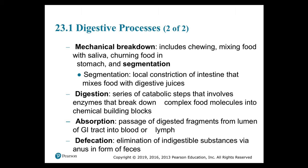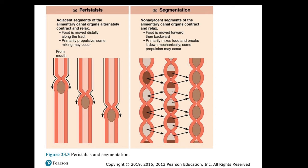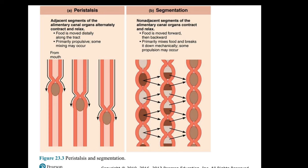Next is absorption — passage of digestive fragments from the lumen of the GI tract into the blood or lymph. Absorption is basically the movement of organic substances, electrolytes, vitamins, and water across the digestive epithelium and into the interstitial fluid of the digestive tract. Then there is defecation or egestion — the elimination of indigestible substances via the anus in the form of feces. In segmentation, non-adjacent segments contract and relax, so food is moved forward then backward, primarily mixing food and breaking it down mechanically.